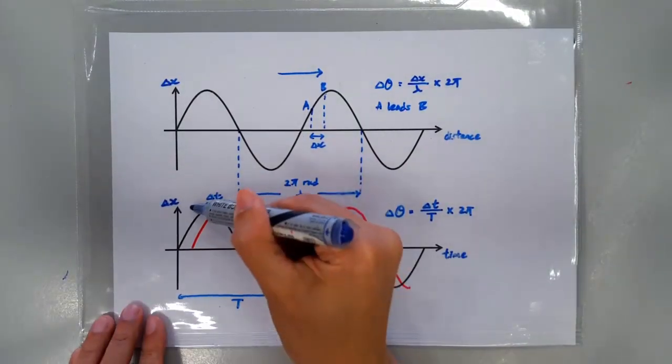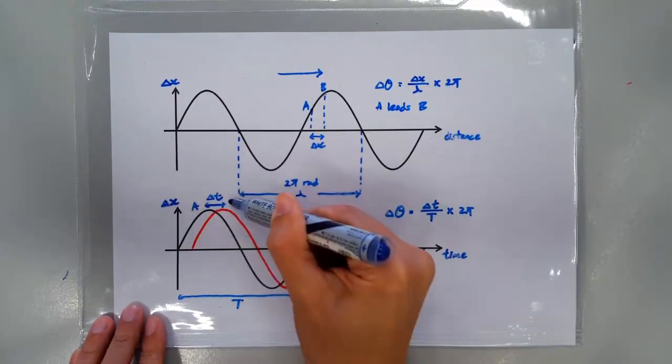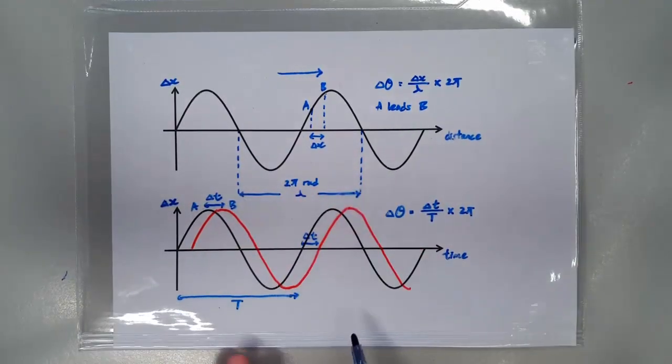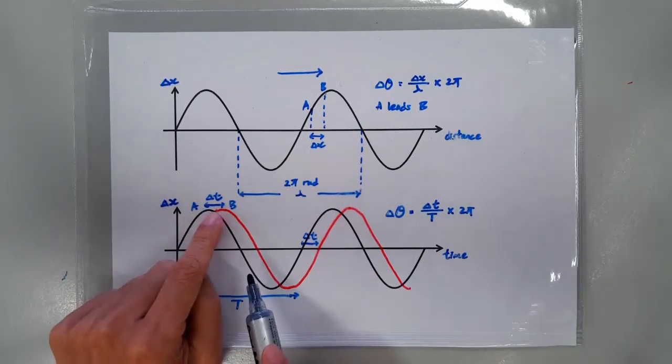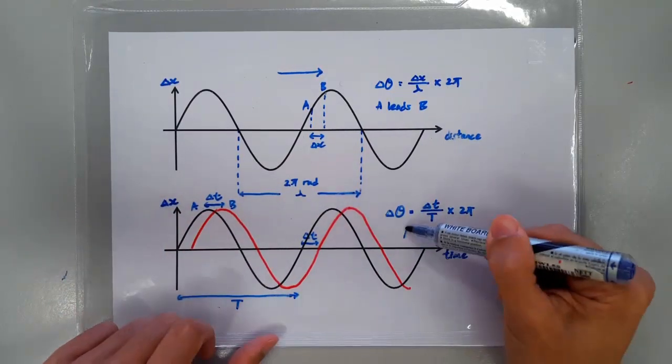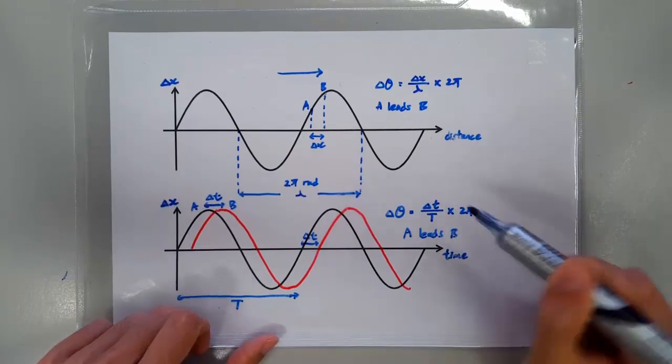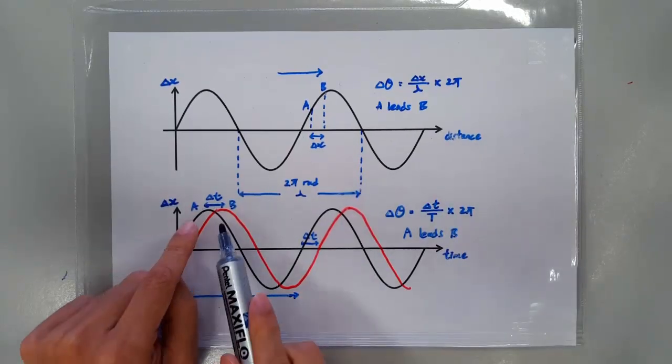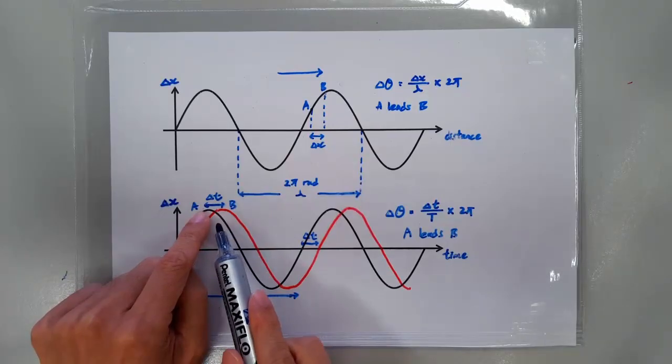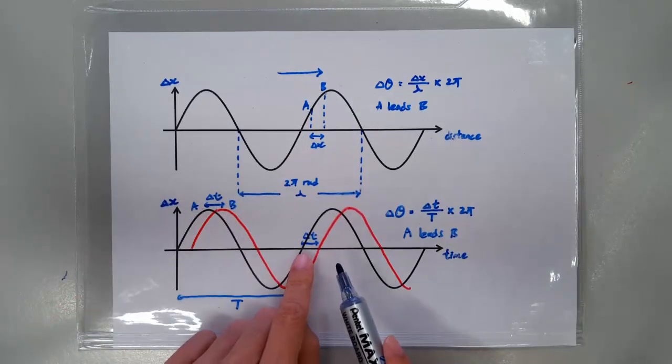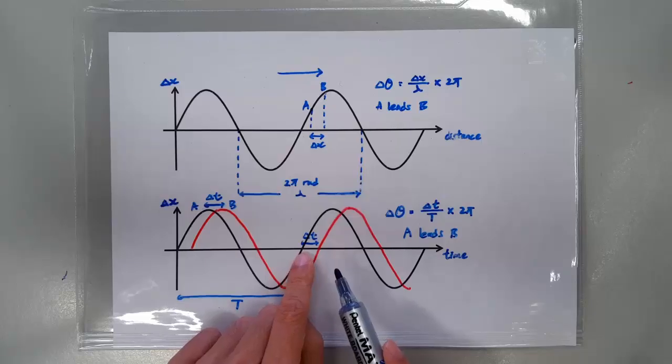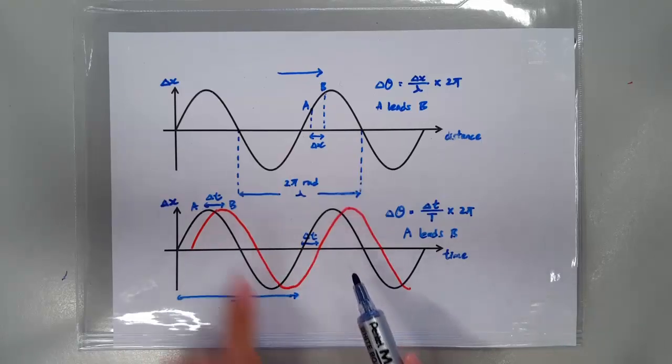Oh, by the way, which oscillation leads which oscillation? So, if these are two oscillations, then obviously A is leading B. Let me write it down first, A leads B. How can we tell? Well, you see, A reaches its maximum position before B does. A does the zero crossing before B does. So, A must be leading B.